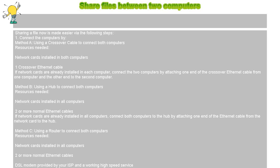Step 1: Connect the computers by Method A — using a crossover cable to connect both computers. Resources needed: network cards installed in both computers and one crossover Ethernet cable. If network cards are already installed in each computer, connect the two computers by attaching one end of the crossover Ethernet cable from one computer and the other end to the second computer.